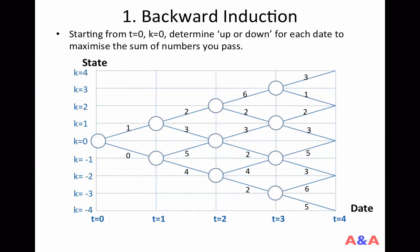Let's start with a simple dynamic optimization problem represented by this diagram. There are four periods. The horizontal axis is time or date — date 0, 1, 2, 3, 4. The vertical axis is for state, denoted by k. k equals 0, 1, 2, 3, 4 or negative 1, 2, 3, 4. We start at date 0 with state k equals 0.